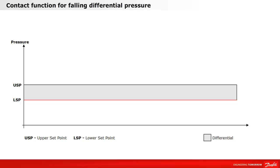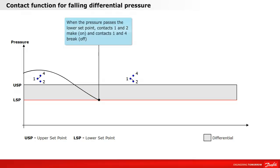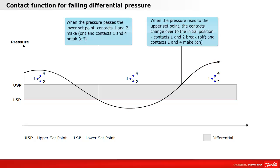Let's take a look at the cutoff for falling differential pressure. When the pressure passes the lower set point, contacts 1 and 2 make and contacts 1 and 4 break. When the pressure rises to the upper set point, the contacts change over to the initial position — contacts 1 and 2 break and contacts 1 and 4 make.